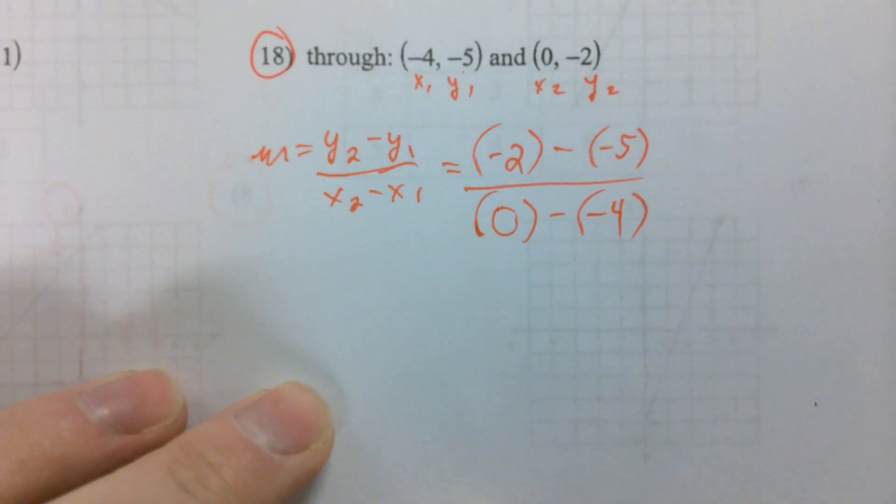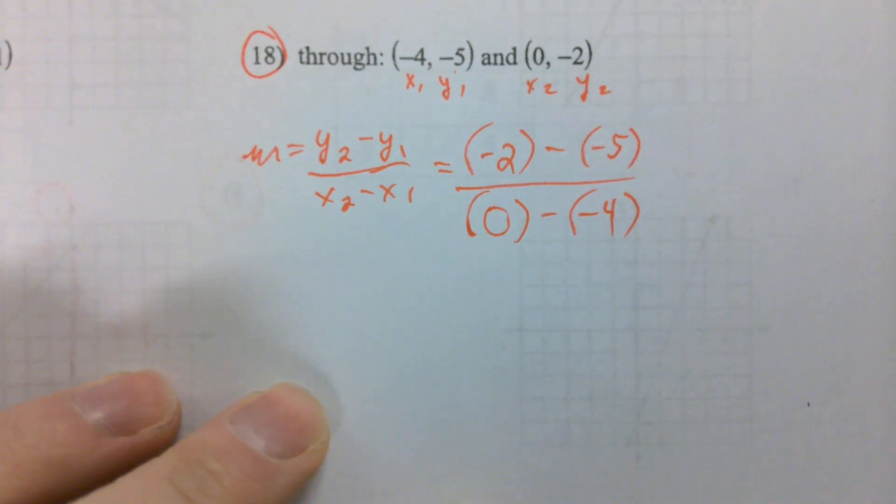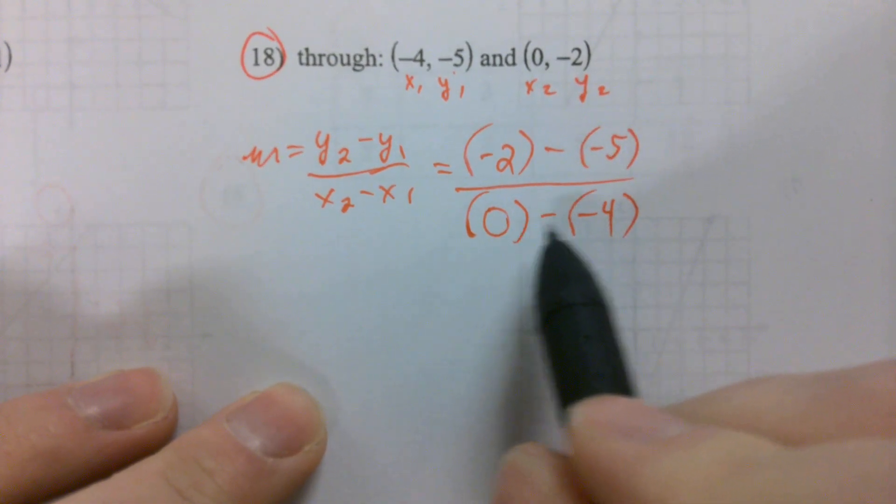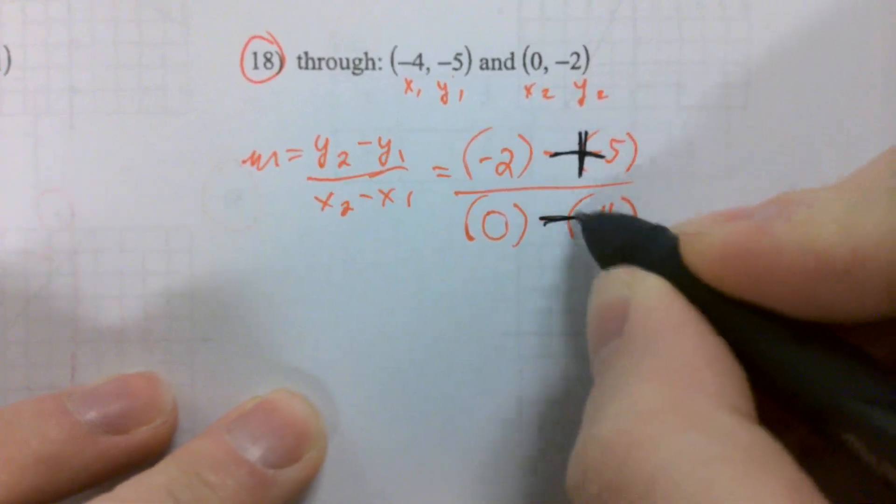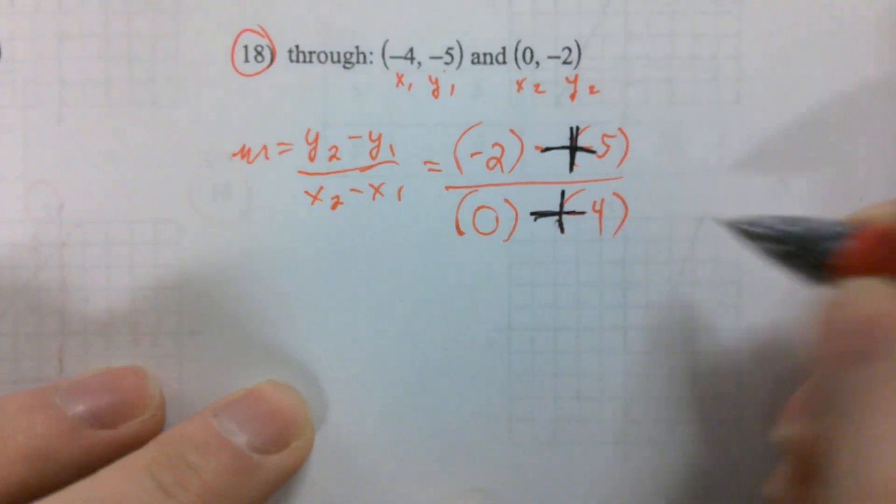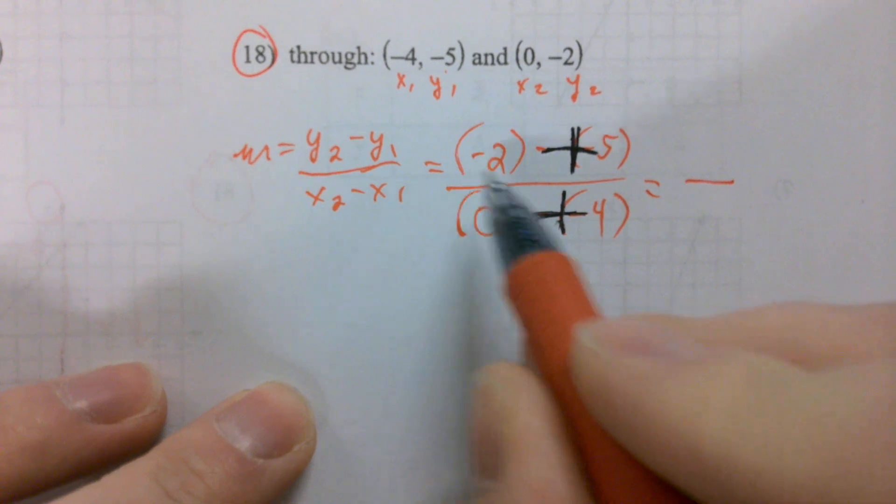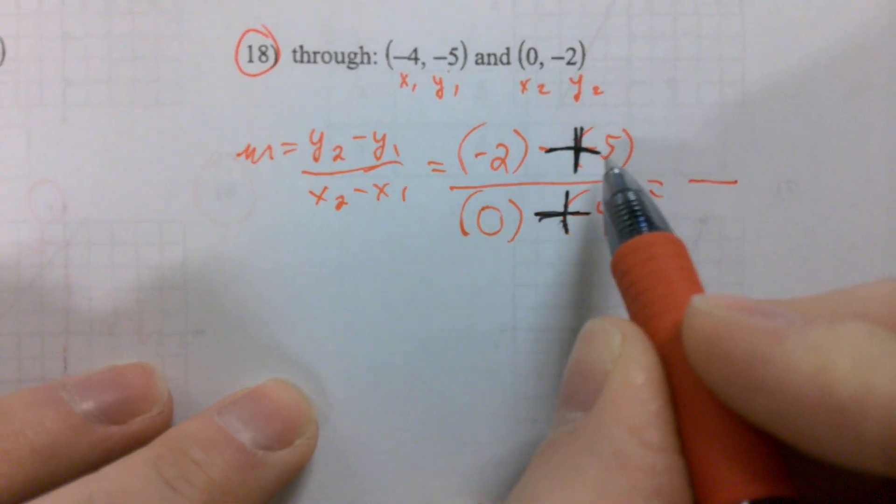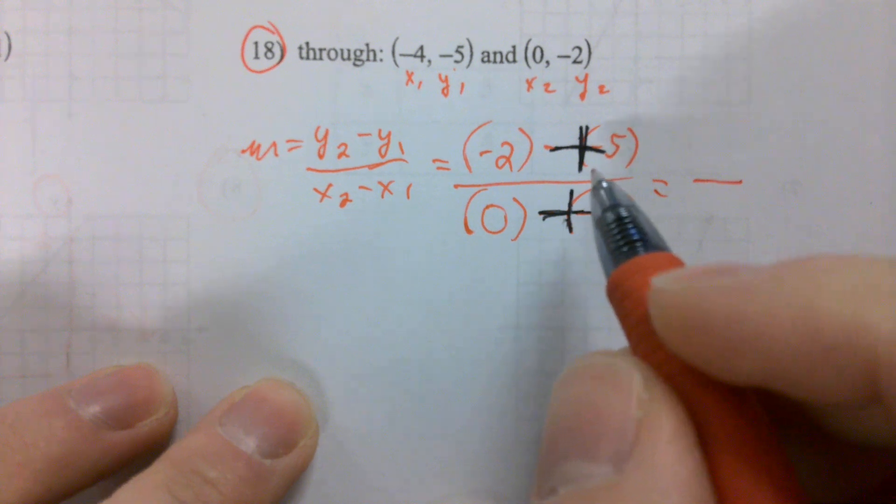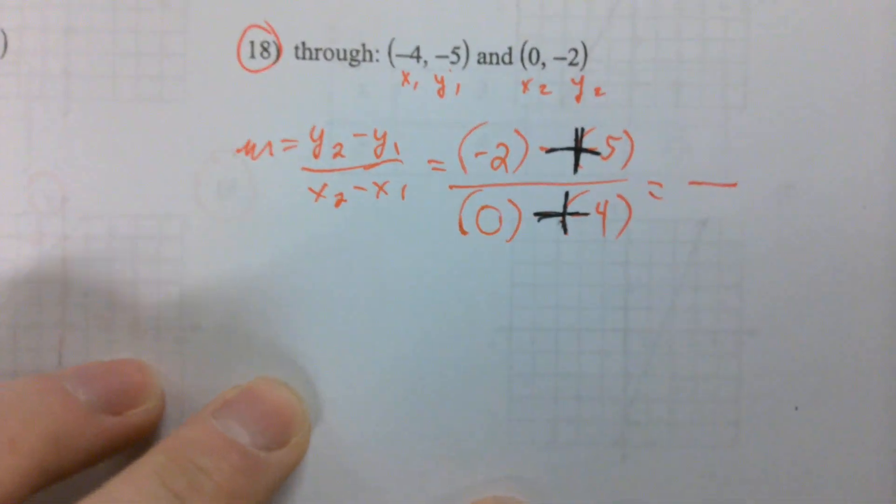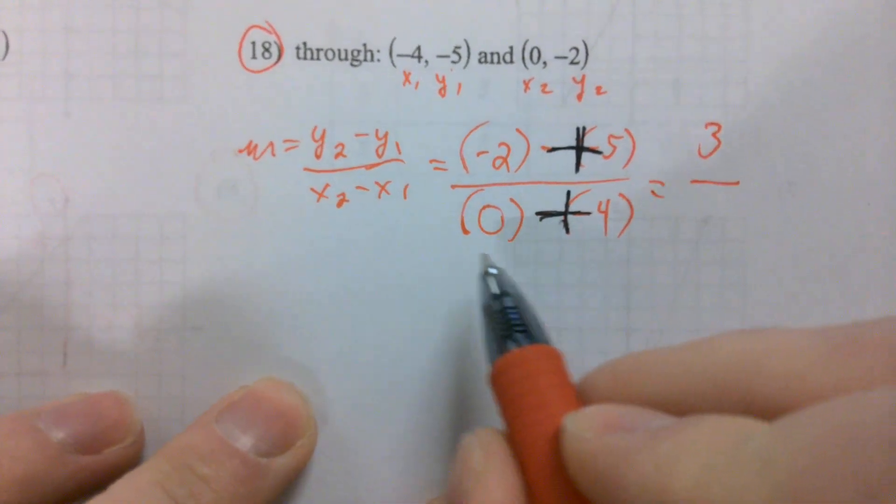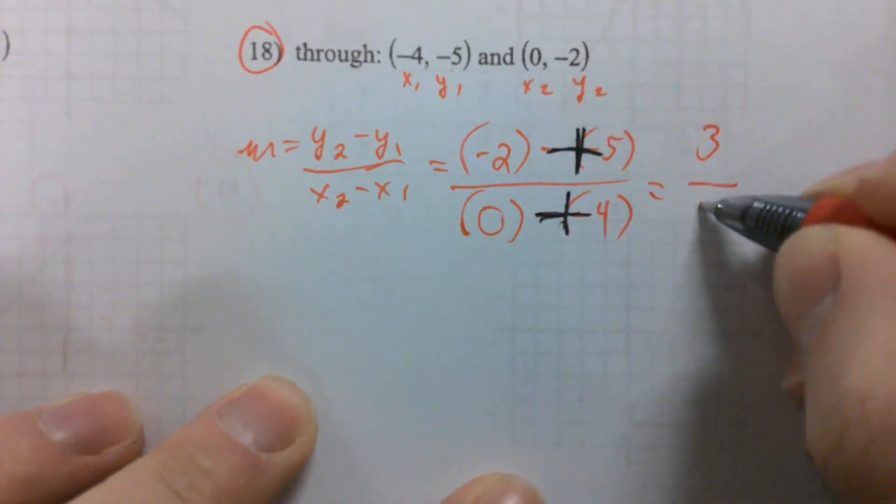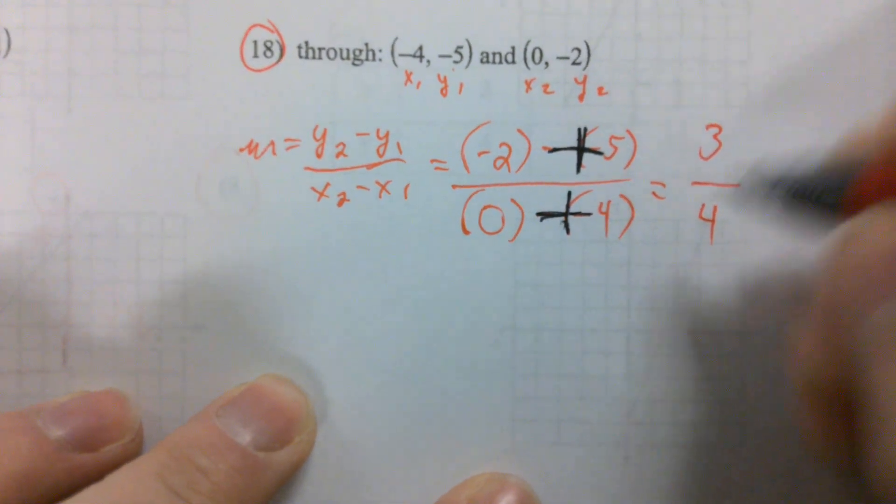We definitely want to use these parentheses, especially when we're dealing with negative numbers so that we can keep them all contained. They don't get confused. What's my X2? Zero minus X1, negative 4. So I see a double negative on the top, double negative on the bottom. What could we turn those pairs of negative signs into? Plus signs. So on the top, we've got negative 2 plus 5. If we have to use our number line, we can. We start at negative 2, add 5 to the right. Where do we end up? Positive 3. And on the bottom, zero plus 4 gives me 4. There's my slope.